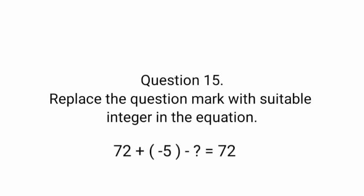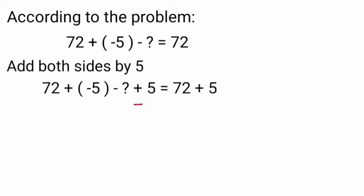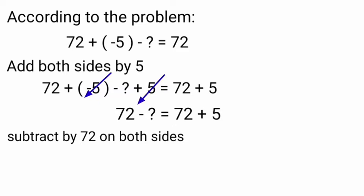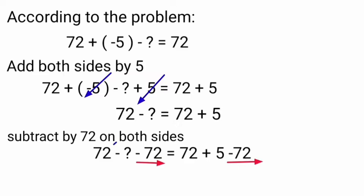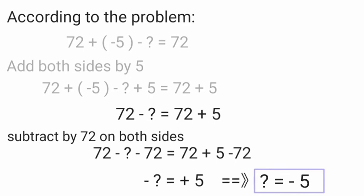Question 15: Replace the question mark with a suitable integer in the equation: 72 plus minus 5 minus question mark equals 72. By adding 5 on both sides, we cancel minus 5 on the left side. Then subtracting 72 on both sides cancels 72, giving us: minus question mark equals plus 5, which implies question mark equals minus 5. So minus 5 replaces the question mark.